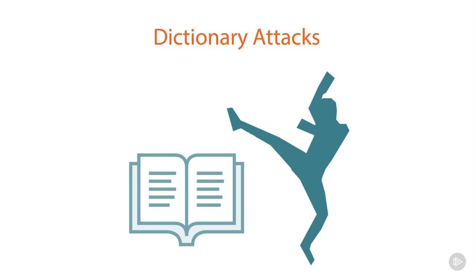When we talk about dictionary attacks, you always hear people say: make sure you don't use a real word. I've got password files for Klingon, Elvish, Danish, Spanish, German, movie actors' names, Lord of the Rings character names, and Greek mythology names. Trust me, if it's a word in any language whatsoever, I'm going to have access to that.